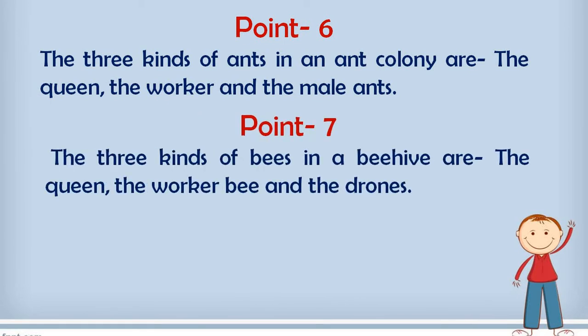Point number 7 is again about a social insect, that is bees. The three kinds of bees in a beehive are - beehive means the colony of bees in which three kinds of bees are there. The first one is queen, the second are the worker bees, and the third are drones. Drone means male bee.